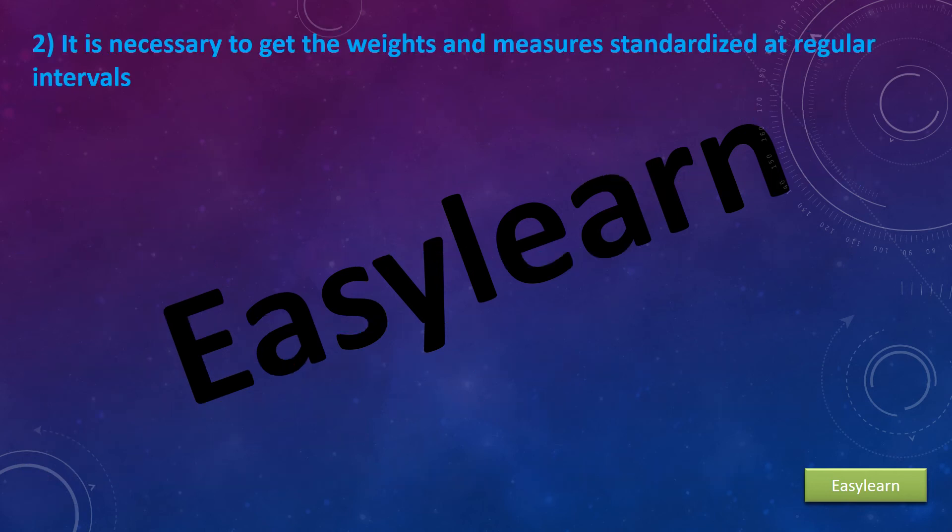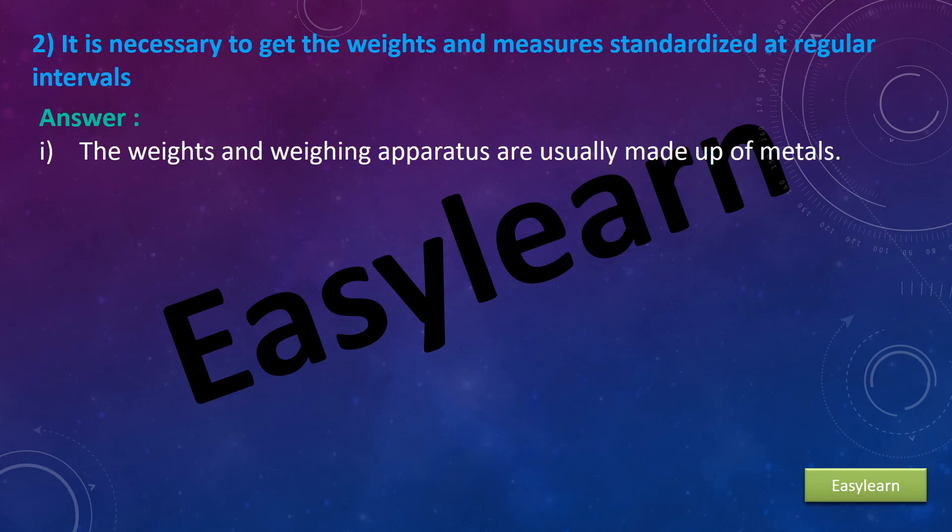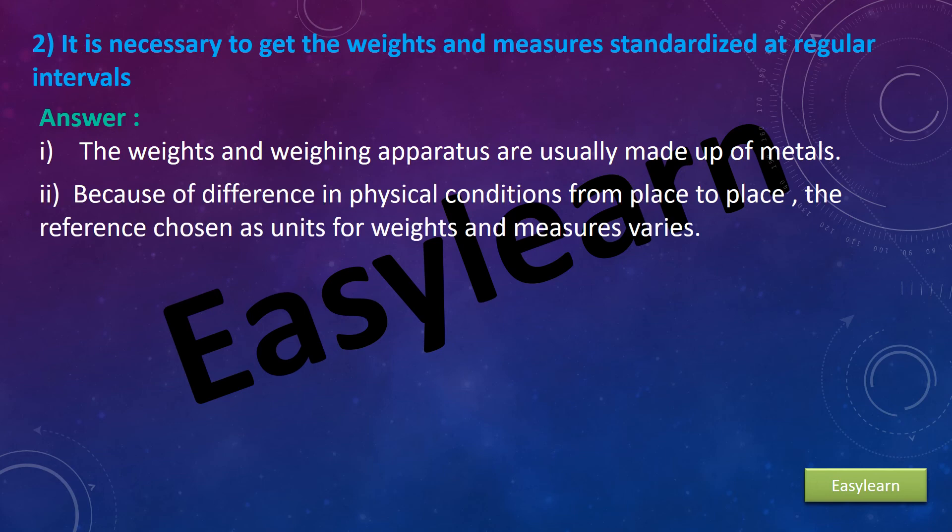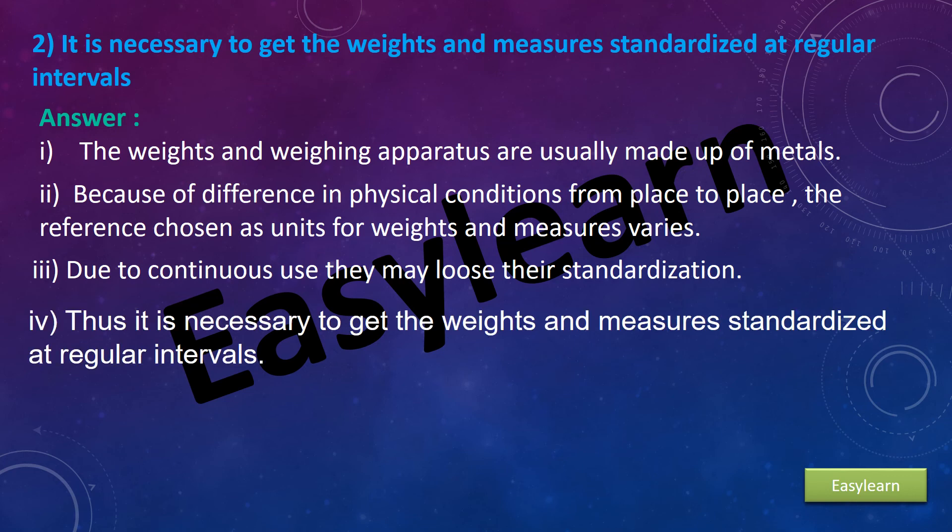Second, it is necessary to get the weights and measures standardized at regular intervals. Answer: The weights and the weighing apparatus are usually made up of metals. Second, because of difference in physical conditions from place to place, the reference chosen as units for weights and measures varies. Third, due to continuous use, they may lose their standardization. Thus, it is necessary to get the weights and measures standardized at regular intervals.